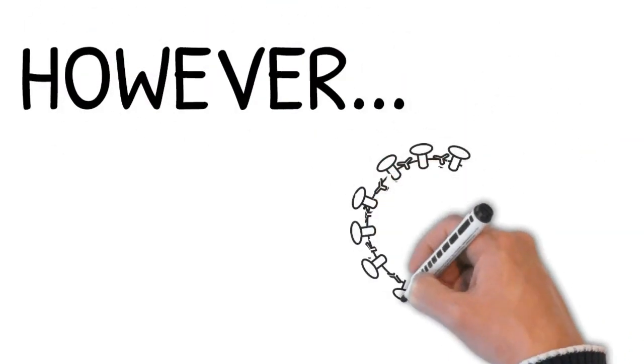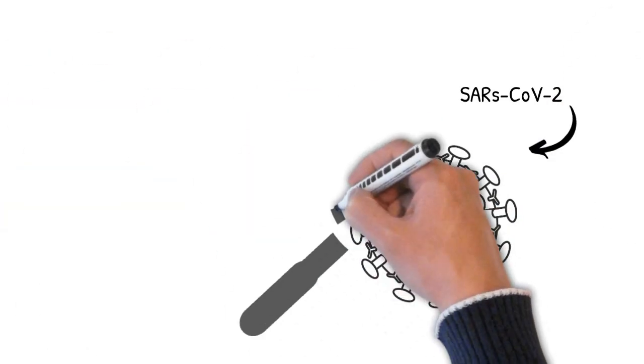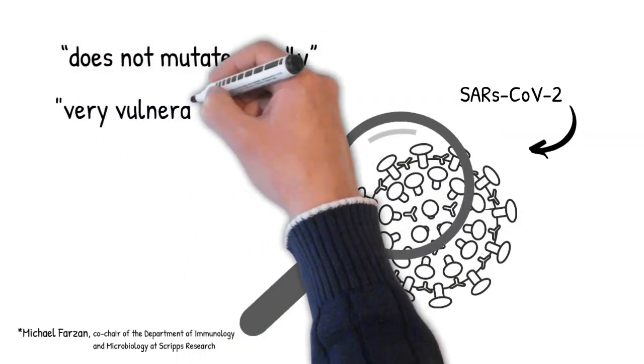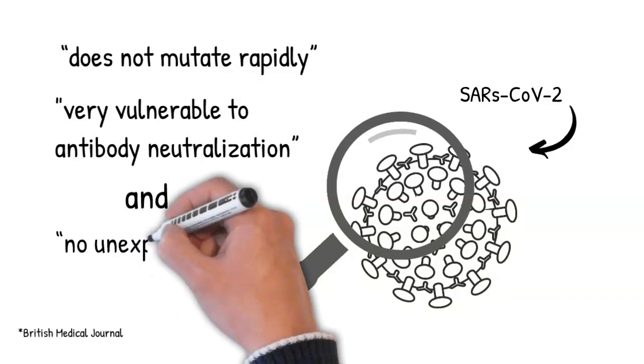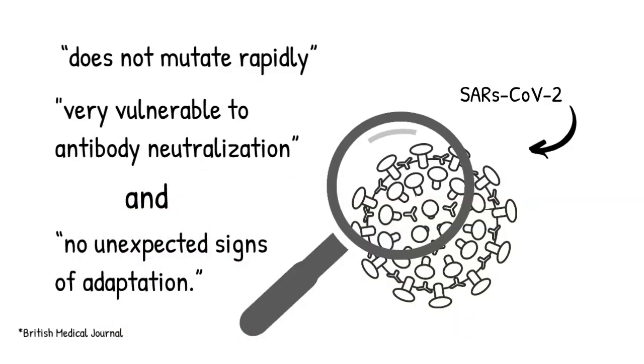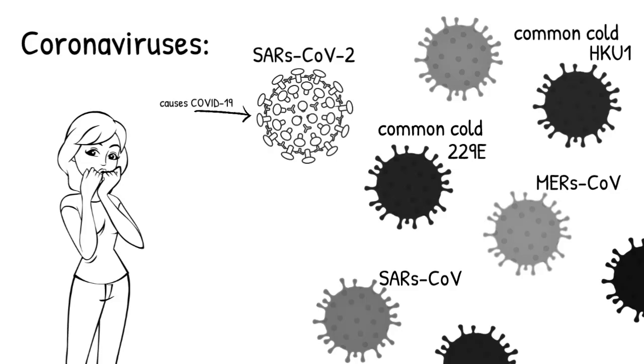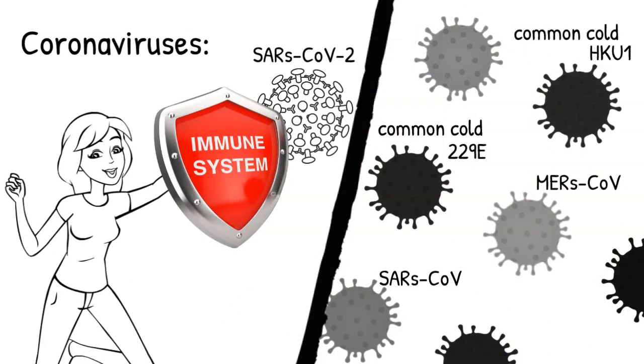However, and this is key, the coronavirus that causes COVID-19 does not share that trait. Genetic research shows that it does not mutate rapidly. It's very vulnerable to antibody neutralization, and it shows no unexpected signs of adaptation. Simply put, even though COVID-19 is caused by a coronavirus, this new type is very different. Hence, naturally acquired immunity against it tends to be potent and long-lasting.